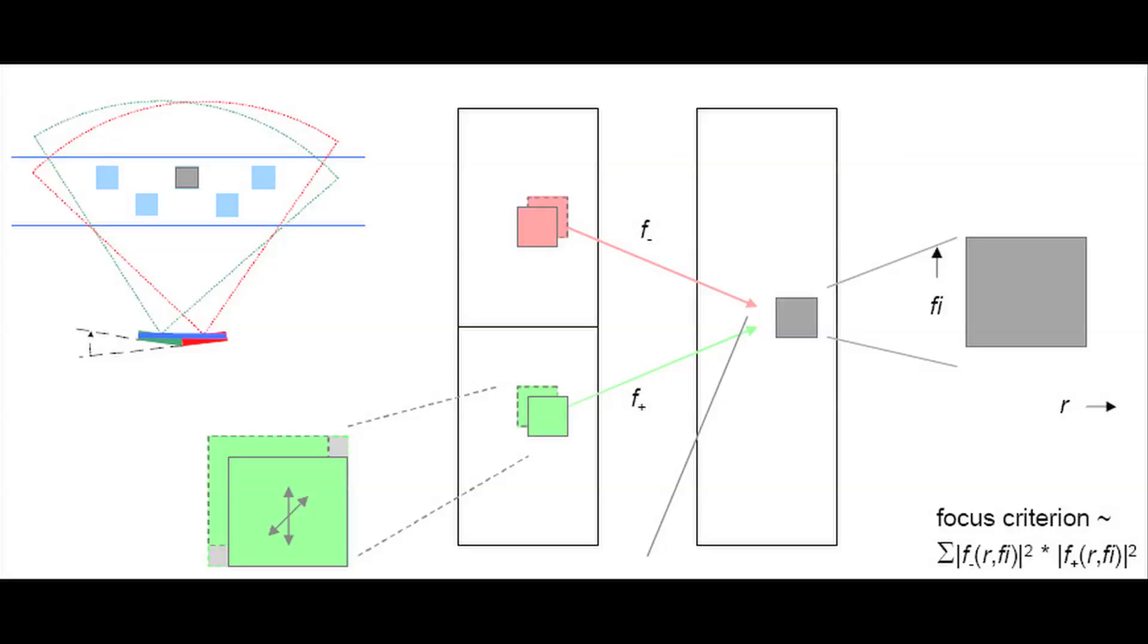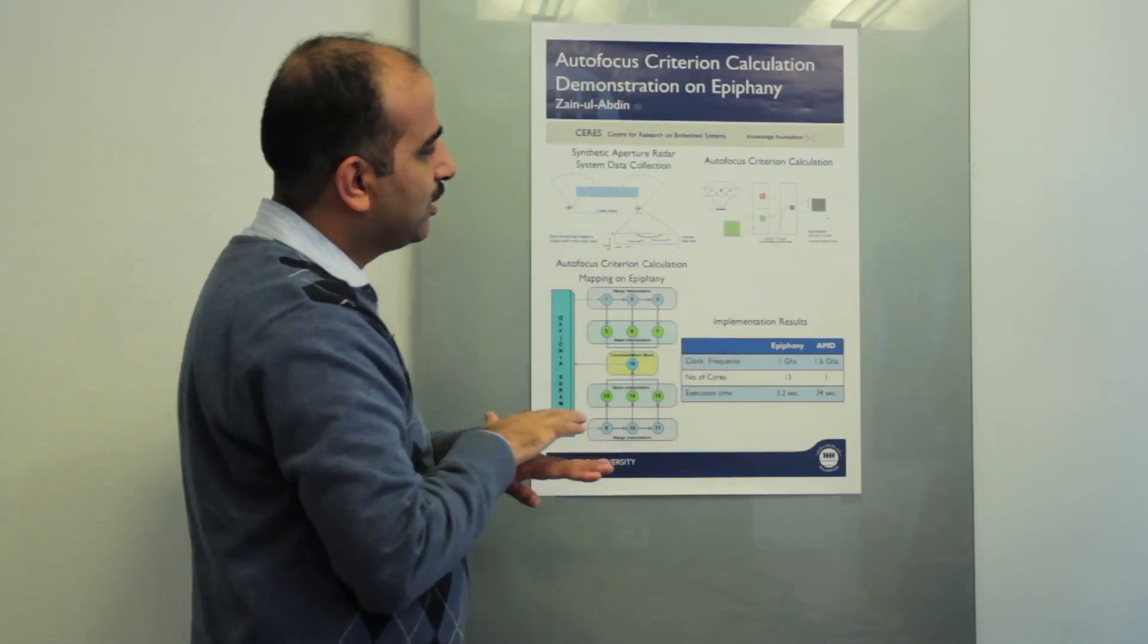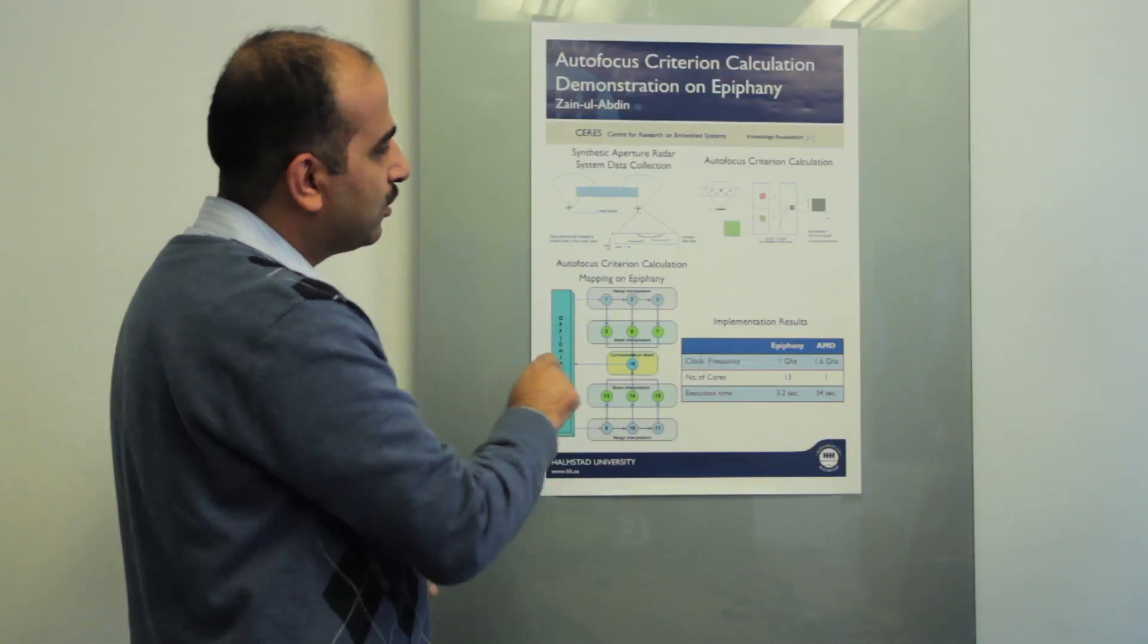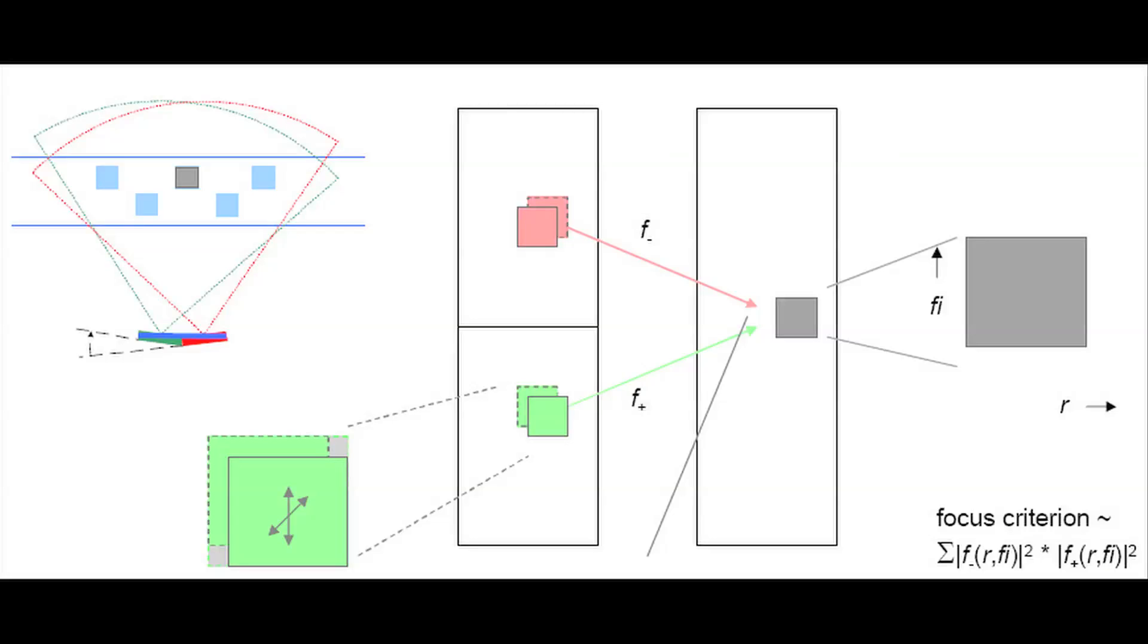In order to correct this de-focusing in the images, you do this autofocus criterion calculation where you match the individual pixels from the two images according to the focus criterion to get the maximum autofocus criterion. Based on that criterion, you refocus the image again to get the correct image.